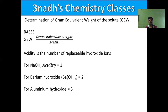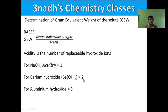For bases, gram equivalent weight equals gram molecular weight divided by acidity. Acidity is the number of replaceable hydroxide ions. For NaOH (sodium hydroxide), there is only one hydroxide ion, so acidity is 1. For barium hydroxide, there are two hydroxide ions, so acidity is 2. For aluminum hydroxide, acidity is 3. In this way, we can calculate the gram equivalent weight for bases.